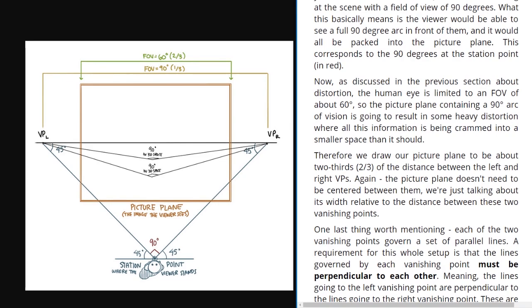Now, as discussed in the previous section about distortion, the human eye is limited to an FOV of about 60 degrees. So the picture plane containing a 90 degree arc of vision is going to result in some heavy distortion where all this information is being crammed into a smaller space than it should. Therefore, we draw our picture plane to be about two thirds of the distance between the left and right vanishing points. Again, the picture plane doesn't need to be centered between them. We're just talking about its width relative to the distance between these two vanishing points.